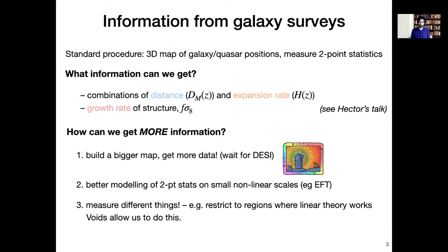Now, a standard procedure, as I'm sure everybody's aware, is that we make a very big 3D map of galaxy and quasar positions, convert that map into two-point clustering statistics, and then analyze those statistics using theoretical models. Now, what information do we get from this? This is covered in quite a few of the other talks.